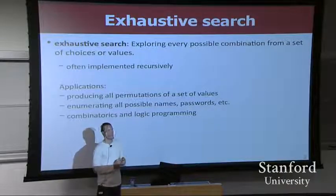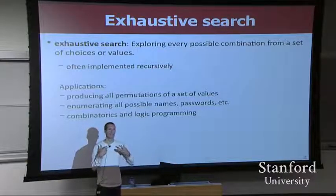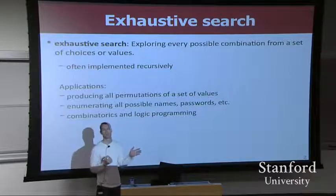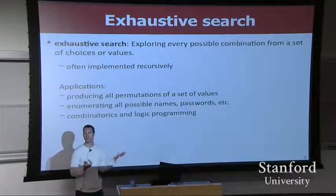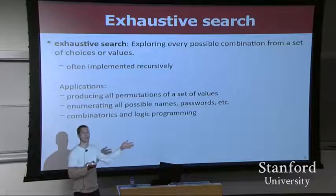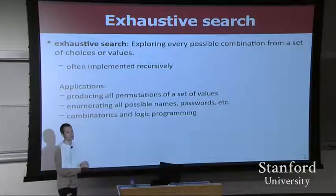The thing is, sometimes it's hard to even enumerate all of the choices. It's easy to enumerate all the choices in a vector - you just loop over them: int i goes 0 to size minus 1. Those are all the choices.